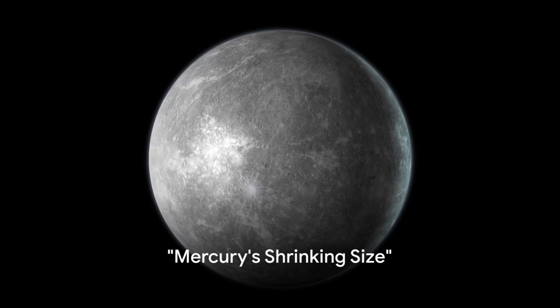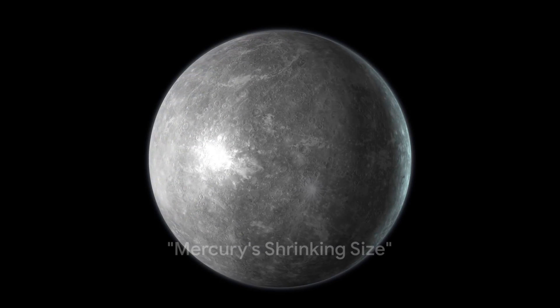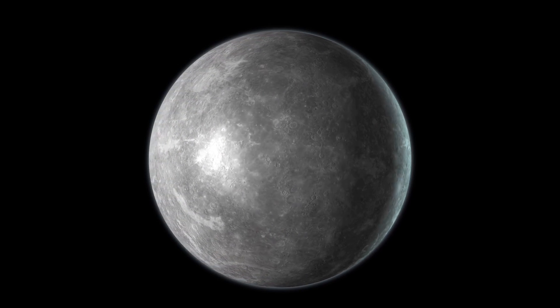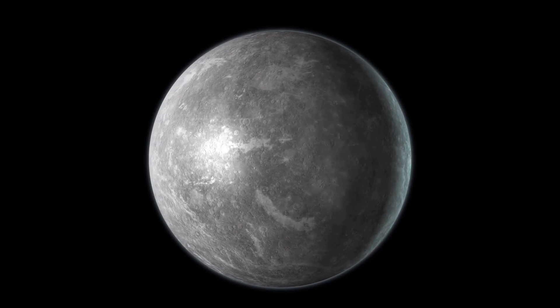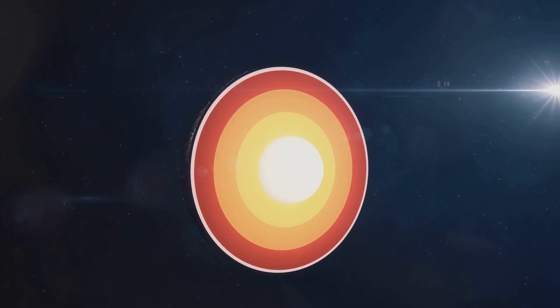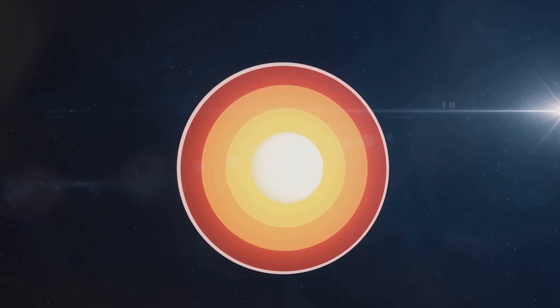Did you know that Mercury is shrinking? Now, that's a statement that might feel a bit outlandish. But it's true. The smallest planet in our solar system is getting even smaller over time. So, what's causing this? Well, it all boils down to the planet's core.